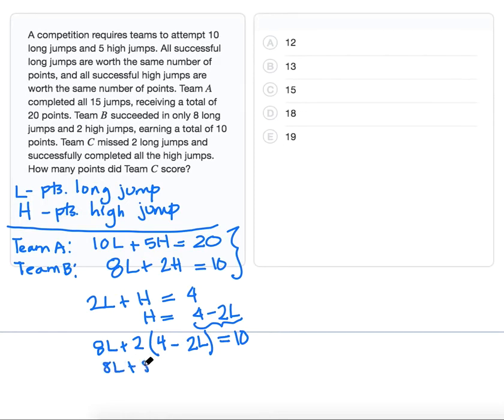That's going to give us 8L plus 8 minus 4L equals 10. If we combine our like terms, we'll get 4L plus 8 equals 10.